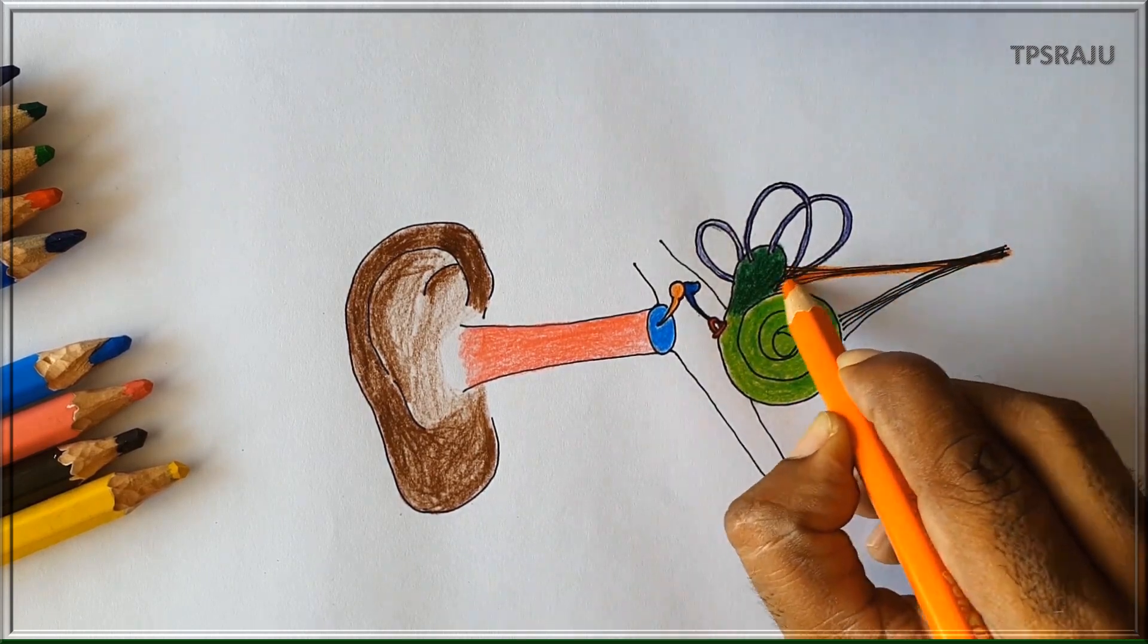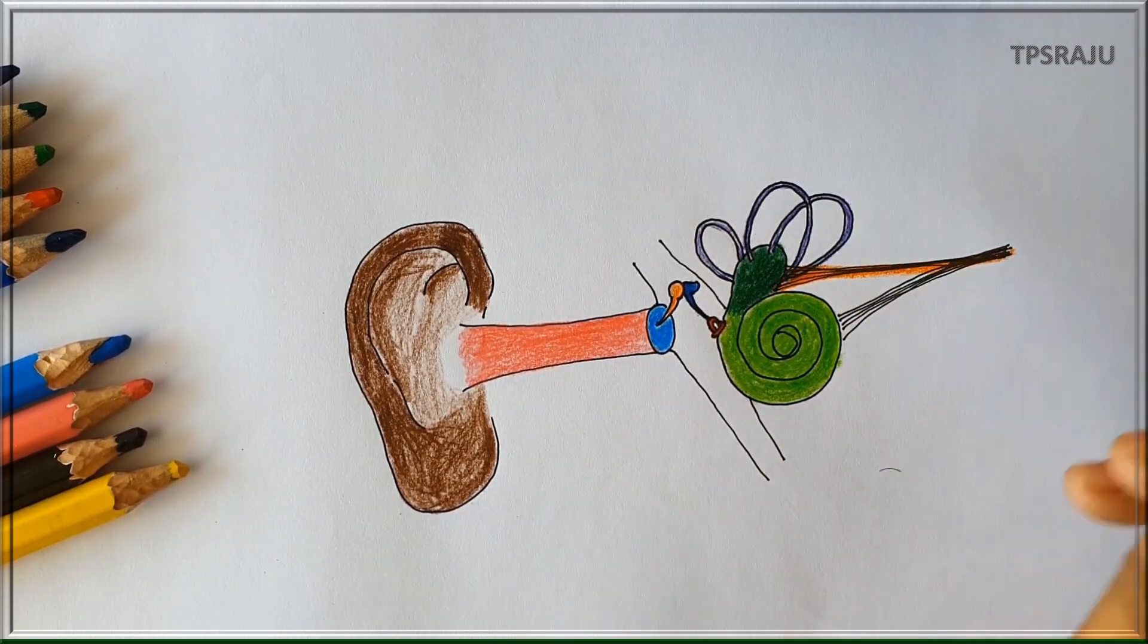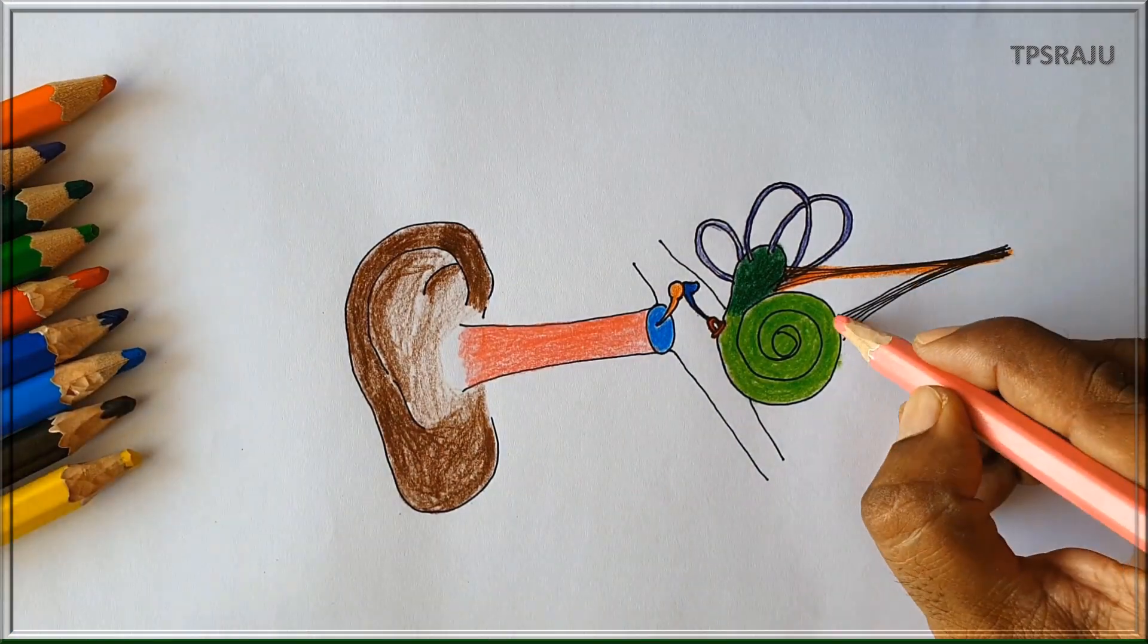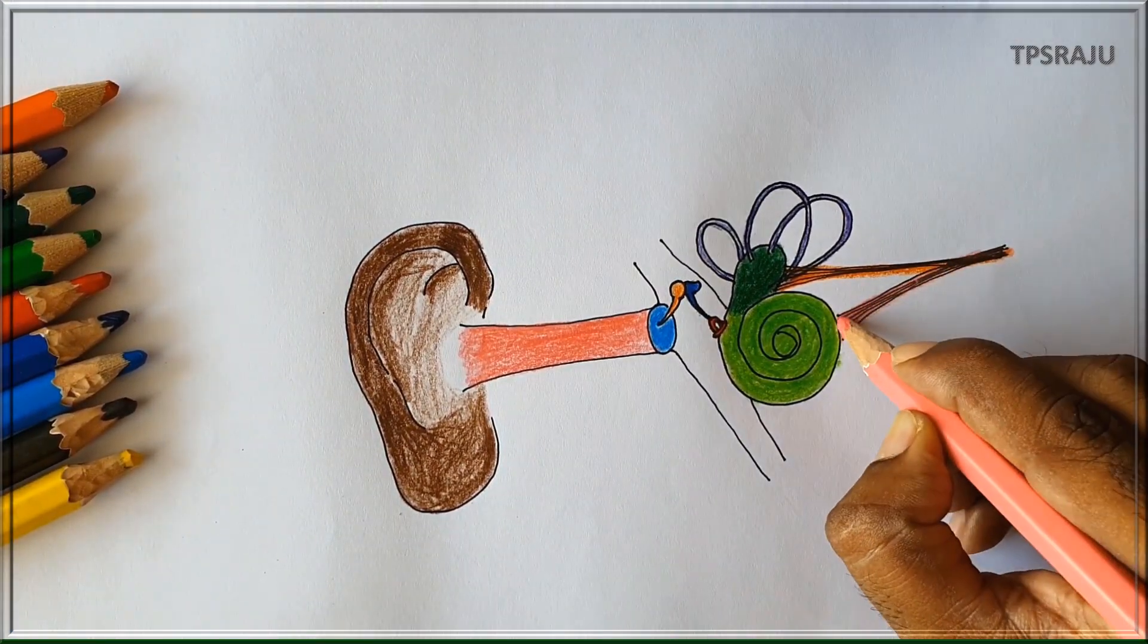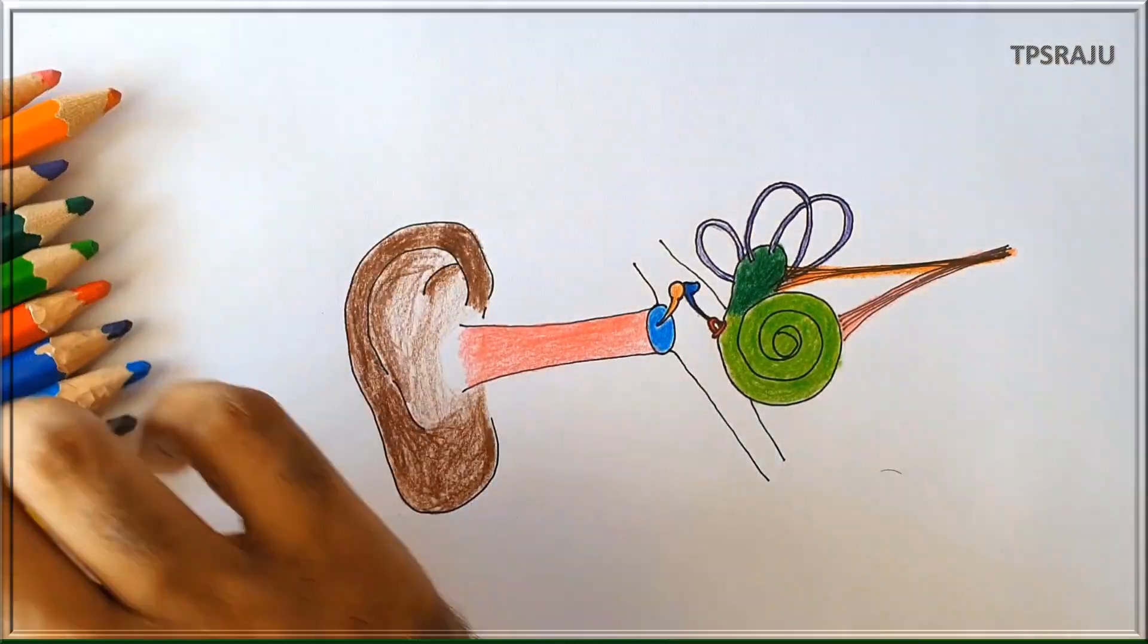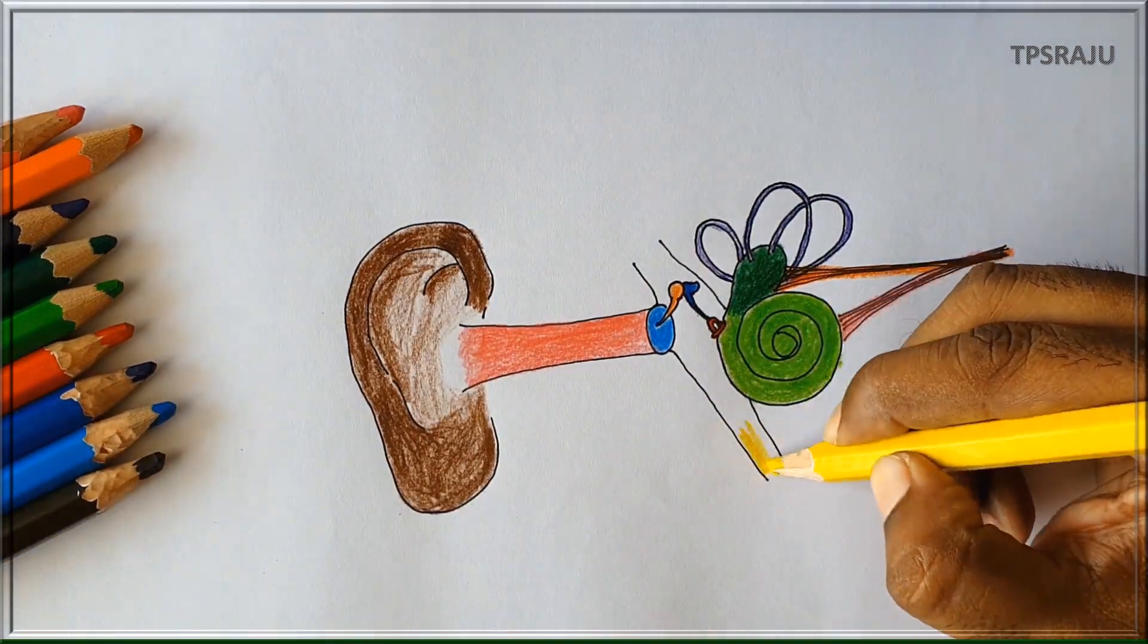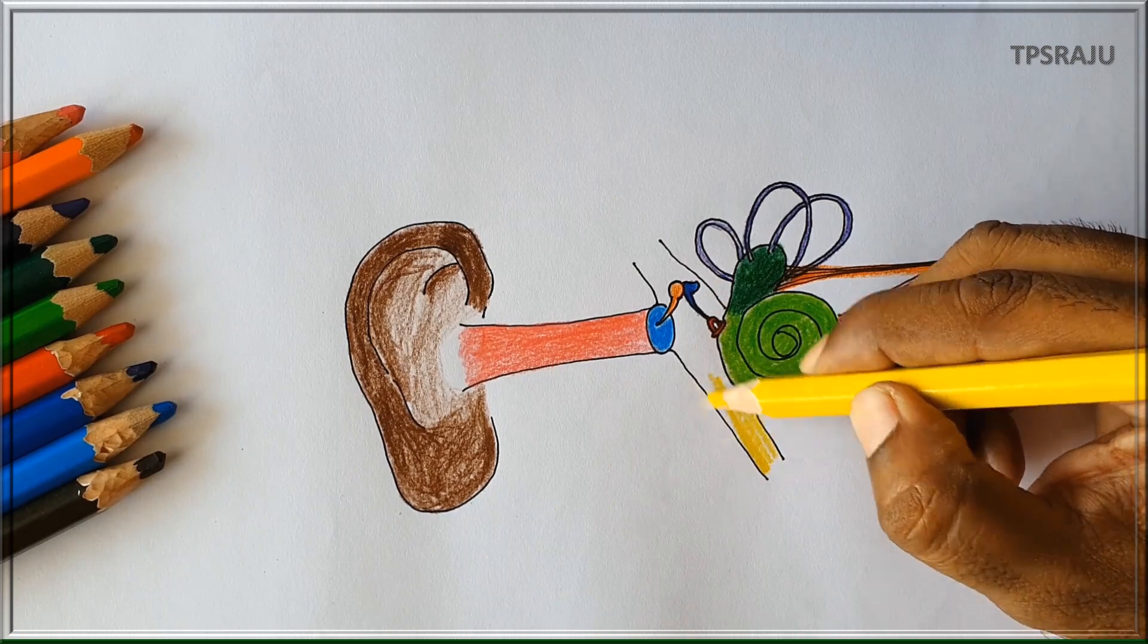Orange color to vestibular nerve, rose color to cochlear nerve, and yellow color to eustachian tube.